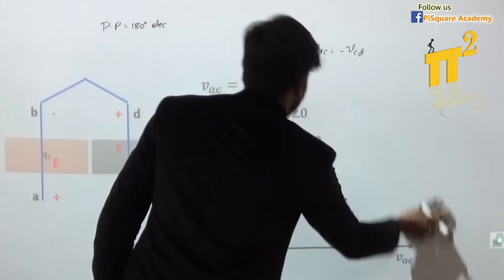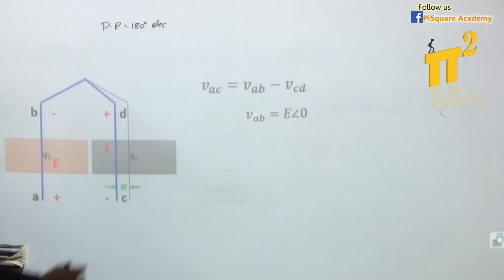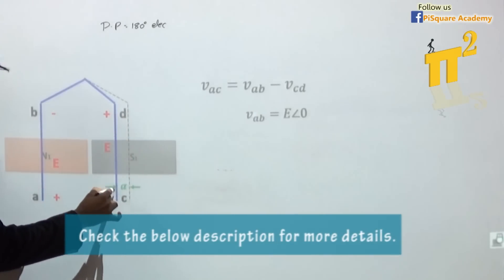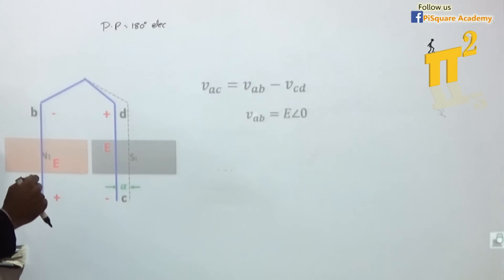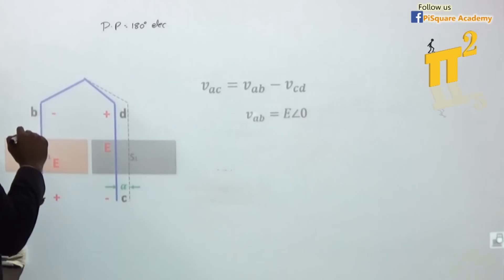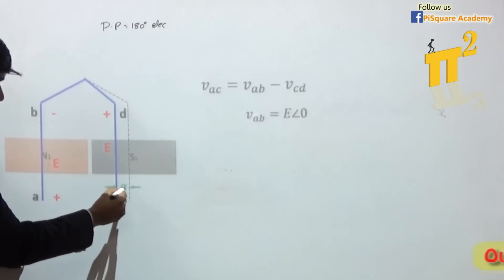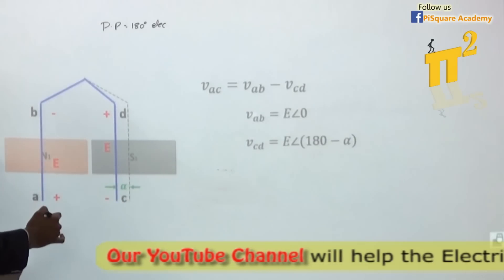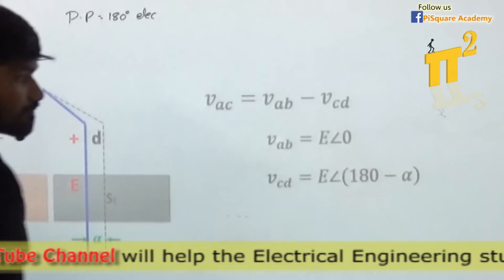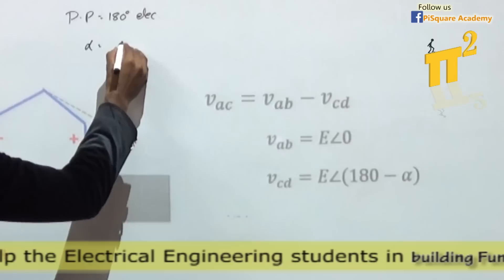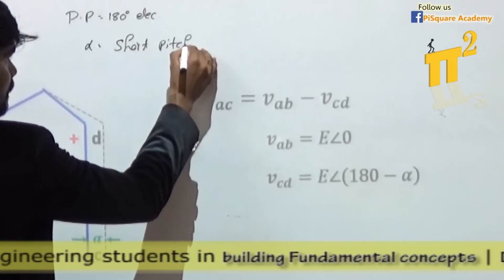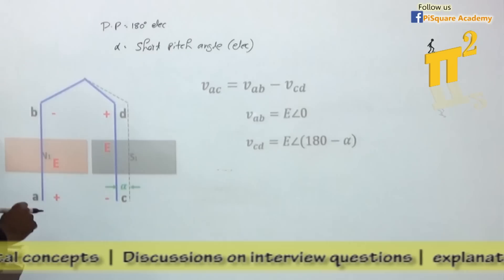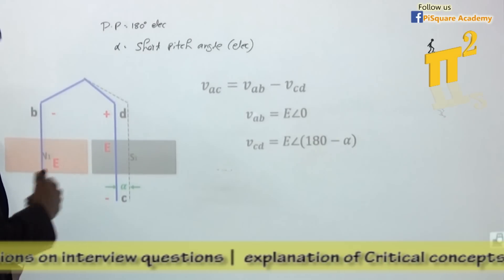Now let's go for the second case: what if I reduce the coil span by an angle alpha? Previously the conductor was here, but now I place it closer — that is short pitching. When coil span equals 180 degrees it is called a full pitch coil. But now I am making the second conductor alpha less than earlier, which means VCD is at 180 minus alpha degrees. Alpha is the short pitch angle in electrical degrees.